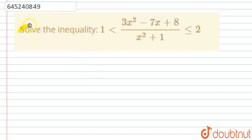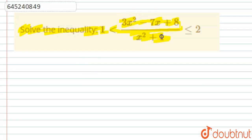Hello everyone. Let us start this question. This question says: solve the inequality 1 < (3x² - 7x + 8) / (x² + 1) ≤ 2. Now, x² + 1 is always greater than 0.